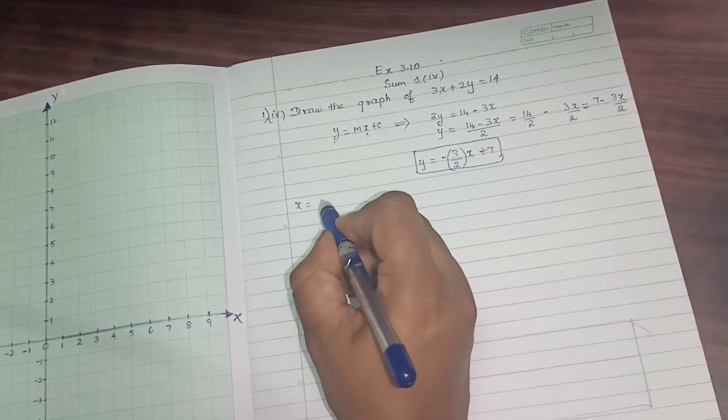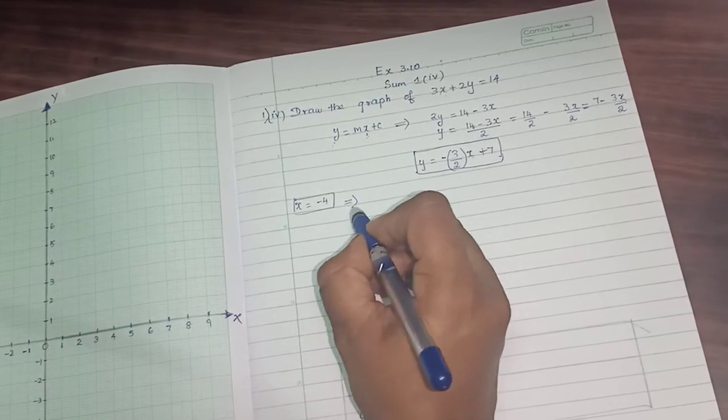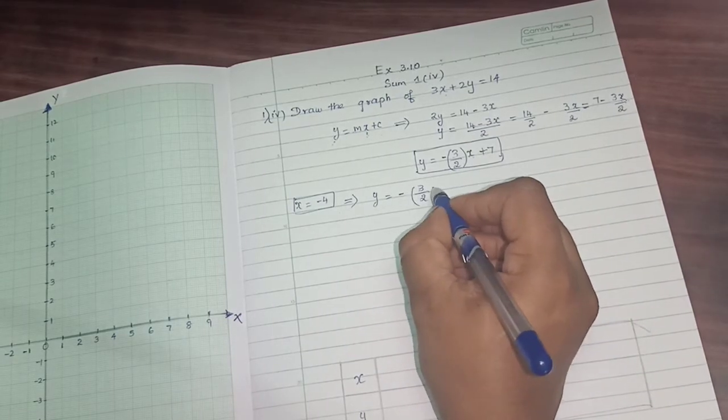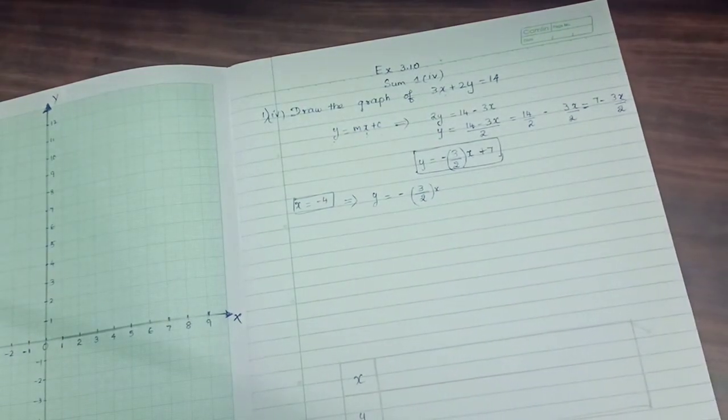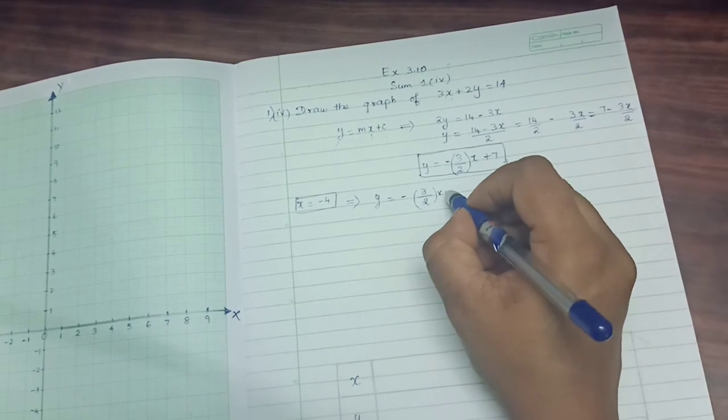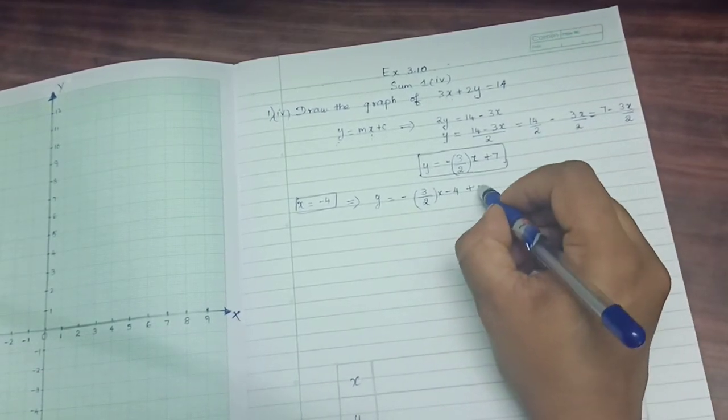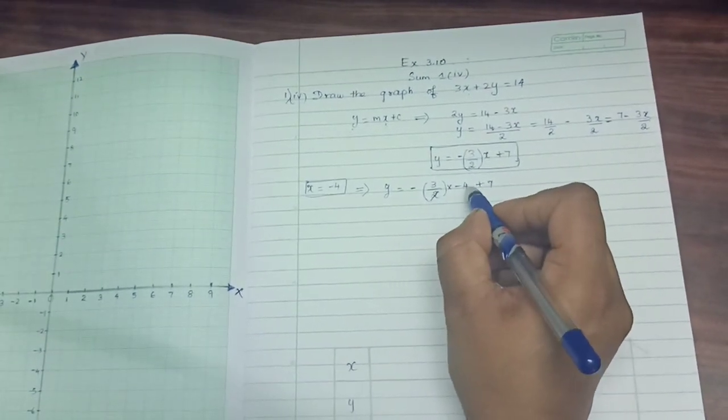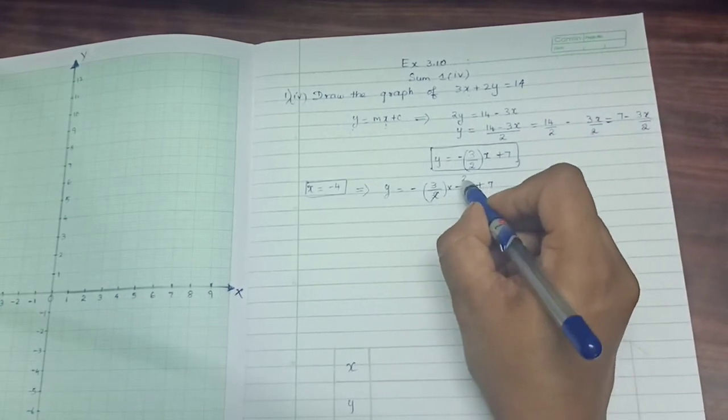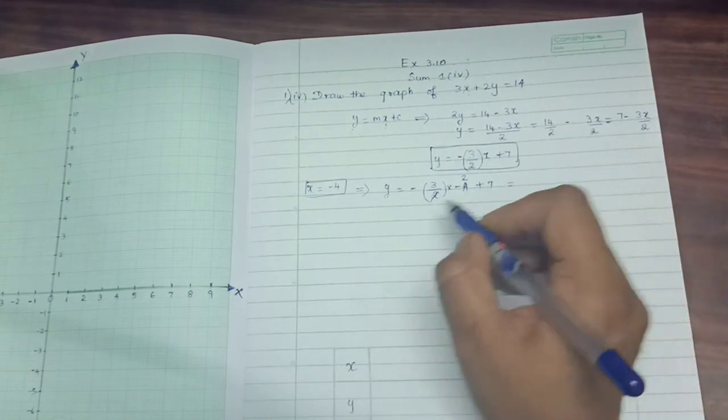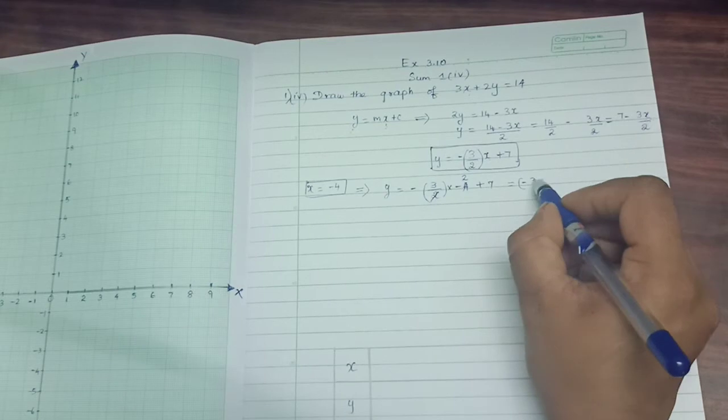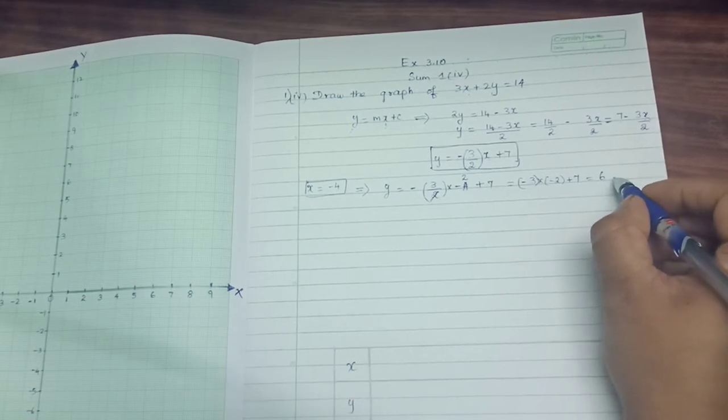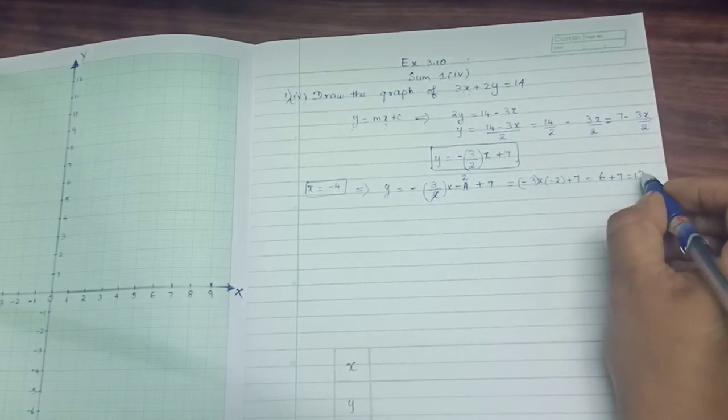When x is equal to minus 4, what will happen to this equation? y equals minus 3 by 2 into minus 4 plus 7. Now we can cancel this 2 and minus 4. When you cancel, 2 into 2 is 4. Don't forget this minus. This is minus 3 into minus 2 plus 7. Minus 3 into minus 2 is plus 6. Plus 6 plus 7, the answer is 13.